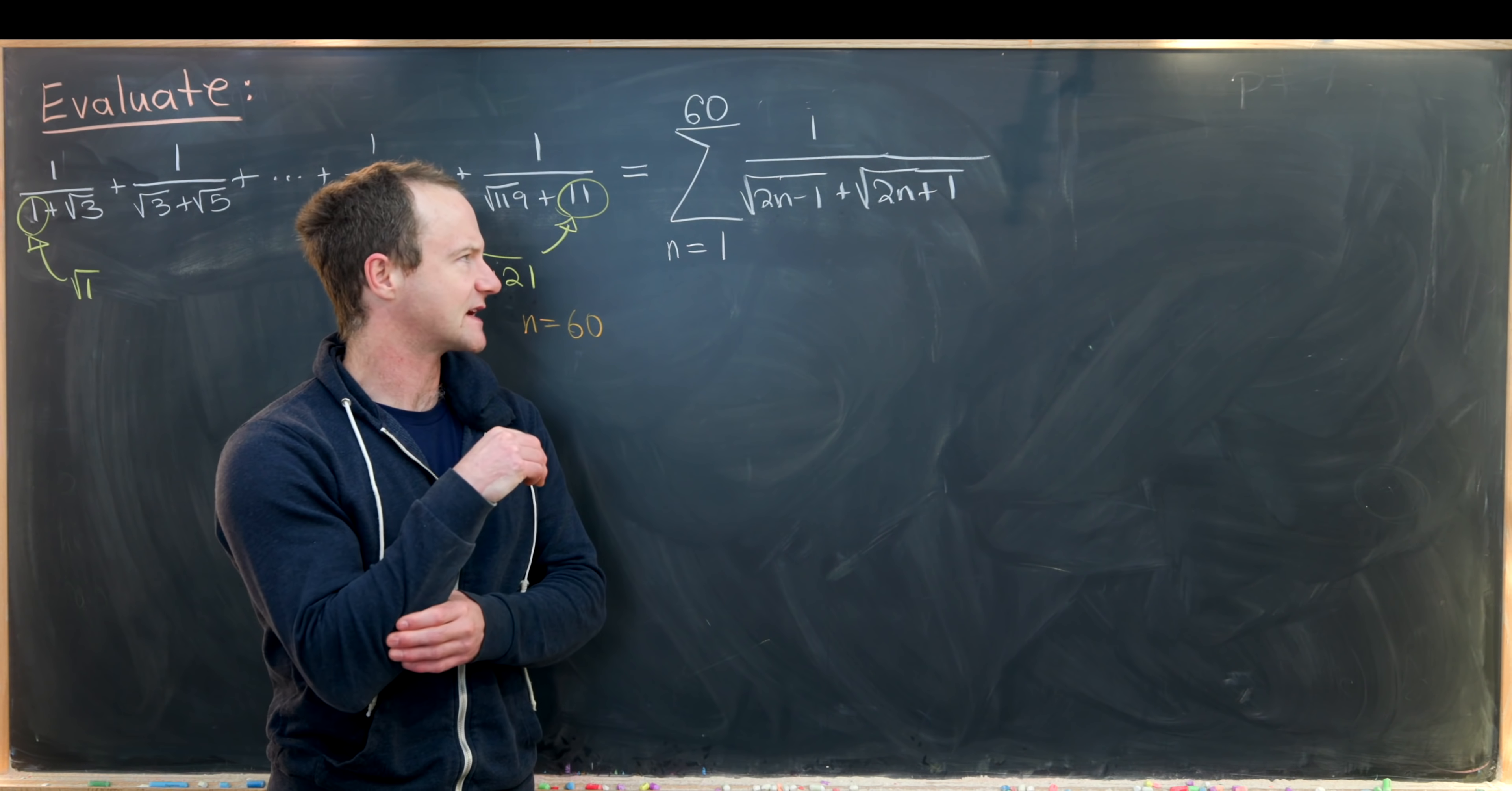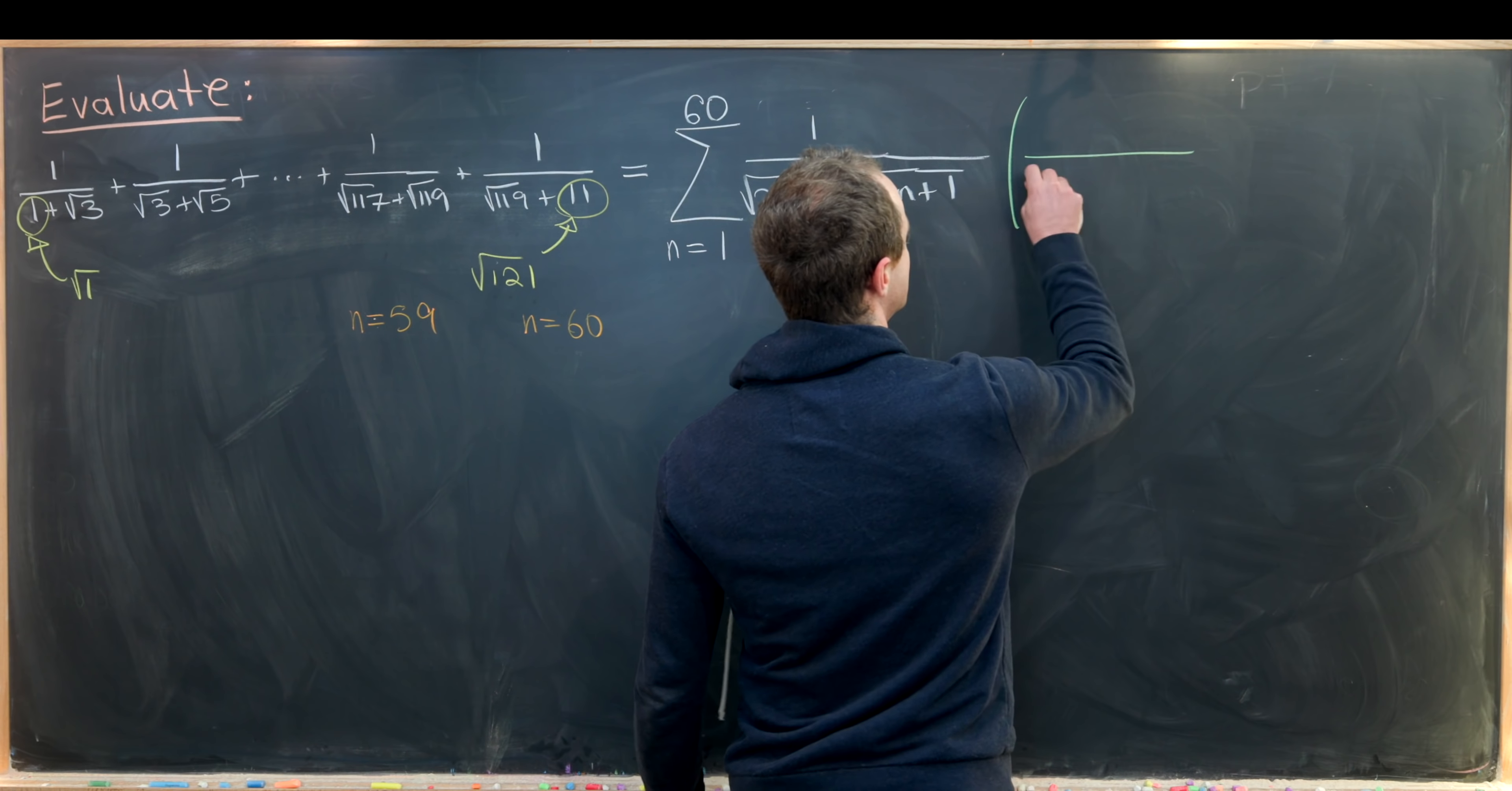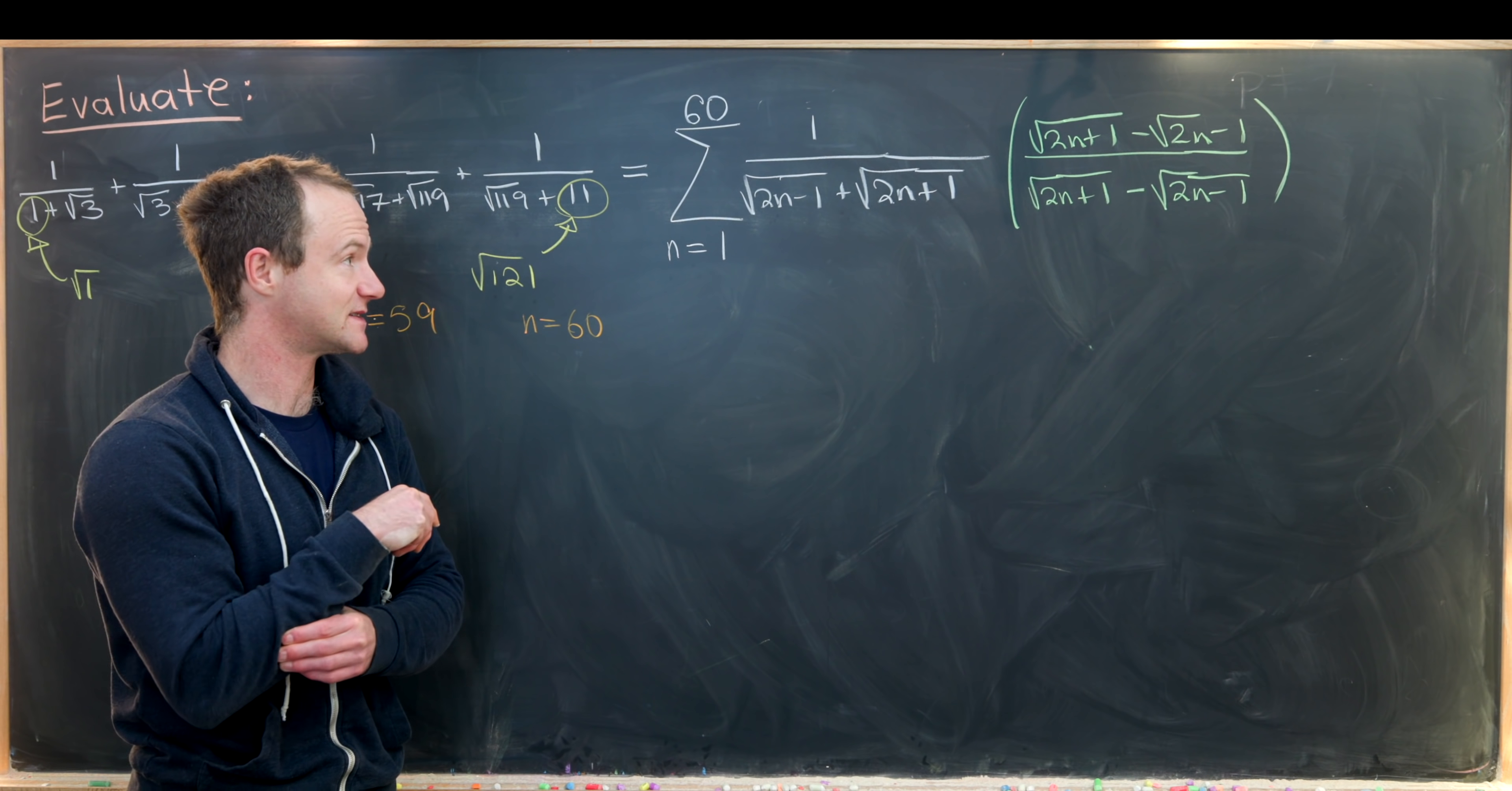So what's our next step? Well we'd probably like to rationalize the denominator. Maybe that'll help us combine these together into one object. So we can rationalize the denominator by multiplying by the radical conjugate. In this case I'll multiply by the square root of 2n plus 1 minus the square root of 2n minus 1, and that's going to occur both in the numerator and in the denominator.